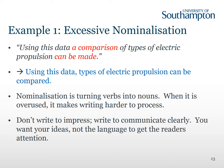The first example has a problem of excessive nominalisation. Nominalisation is when you turn a verb into a noun. Here we have the noun 'comparison', which comes from the verb 'to compare'. This has been changed into a noun presumably to try to sound more formal; however, it makes it unnecessarily wordy and harder to process. This sentence could be rephrased, as I have done in blue: 'Using this data, types of electric propulsion can be compared.' The meaning hasn't changed but it's actually simpler to read. It's important to remember that you're not writing to impress — you're writing to communicate clearly. You want your readers to focus on your ideas and not on the language.